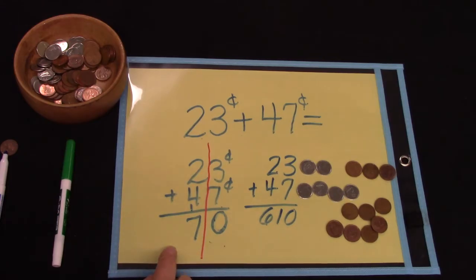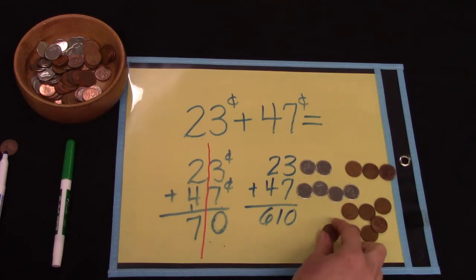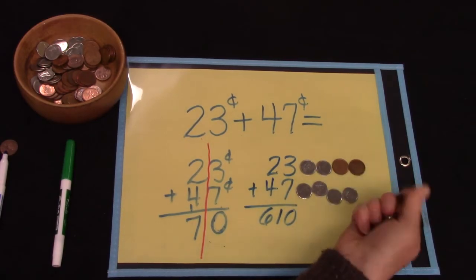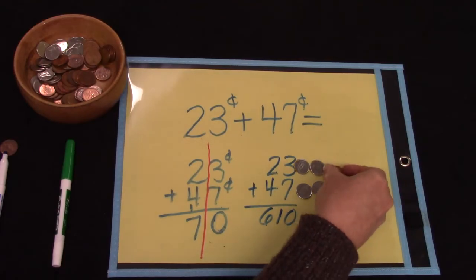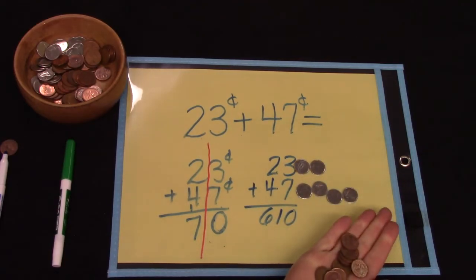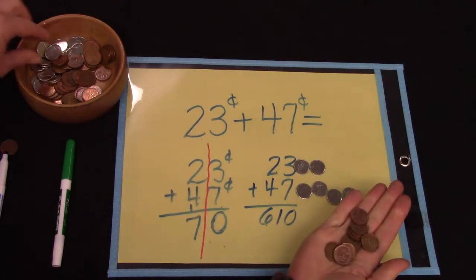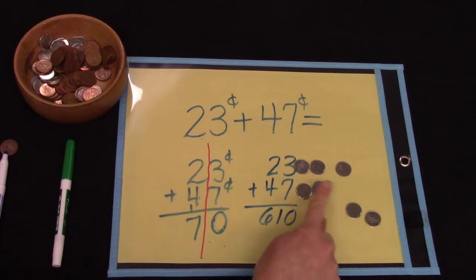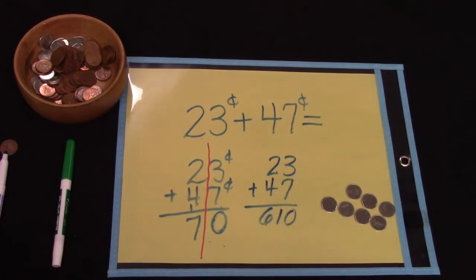Now I want you to see why we do not put 10 in the ones place. Because we can make a group of 10: 1, 2, 3, 4, 5, 6, 7, 8, 9 and 10. I have 10 cents that I can trade in for a dime. 10, 20, 30, 40, 50, 60, 70.